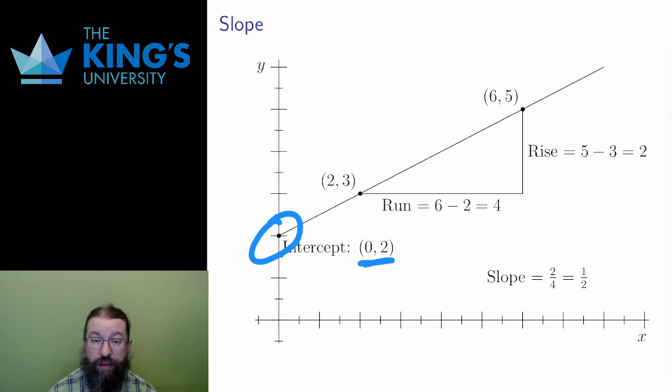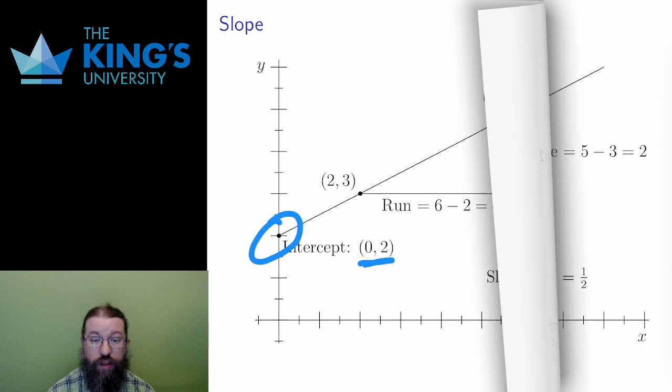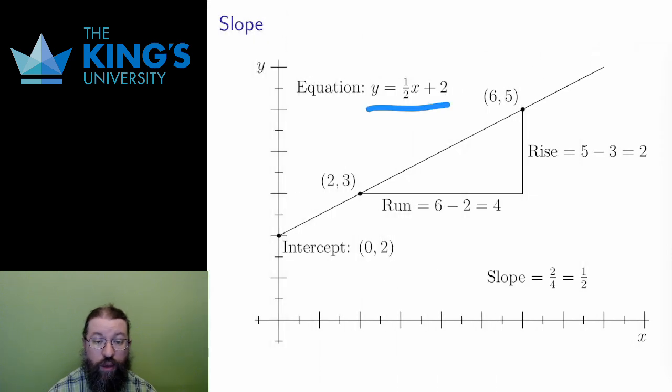Using the slope and the intercept, I can write the equation of a line. Here, y equals 1/2 x plus 2. In this form, y is alone on the left of the equation. On the right, the coefficient of x is the slope, and the added subtracted constant is the intercept.